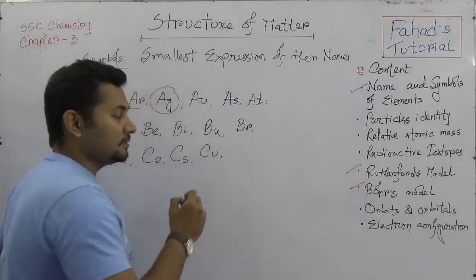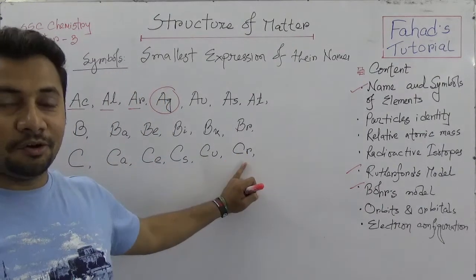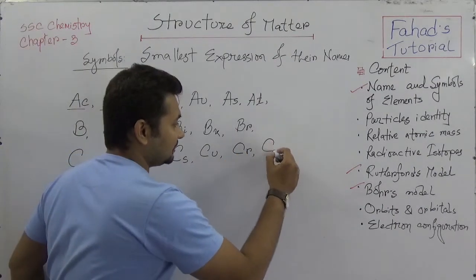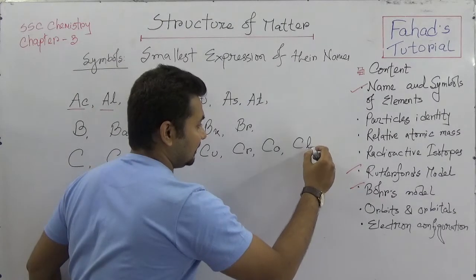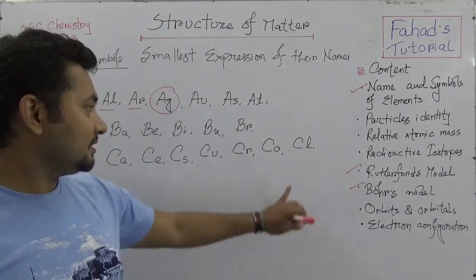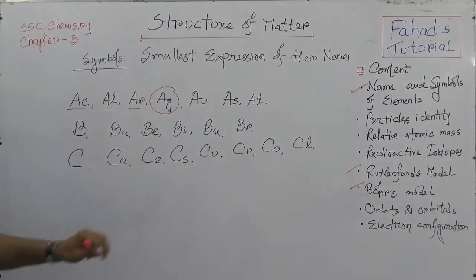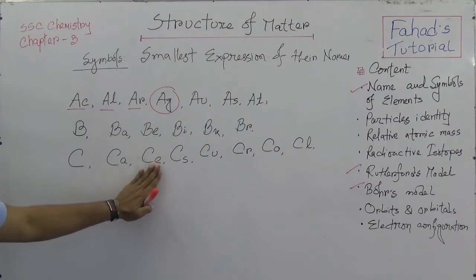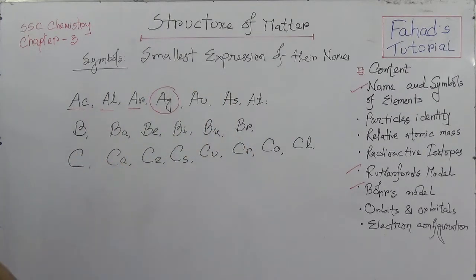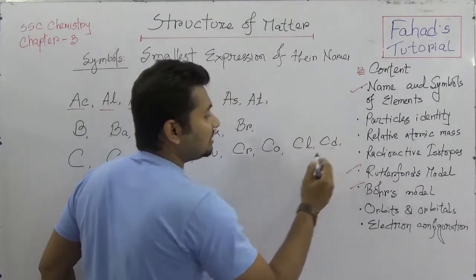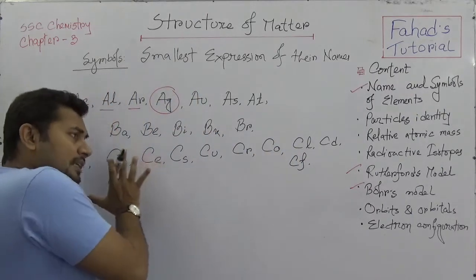So the C elements are: carbon, calcium, cerium, cesium, copper, chromium, cobalt, chlorine, and we can also have cadmium and californium. These are all the names starting with C.